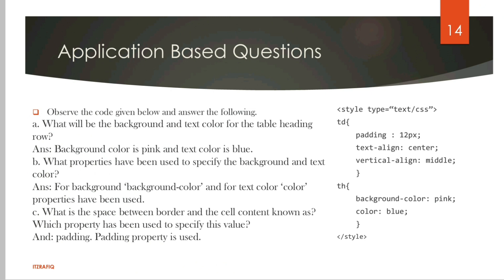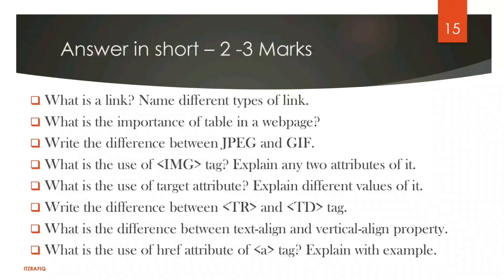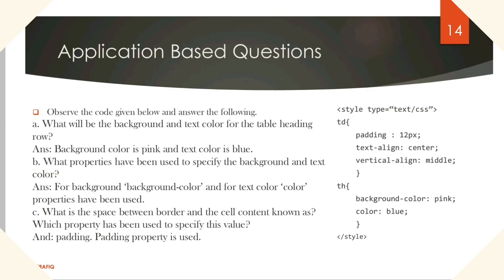Here are long answers for two to three marks. Sometimes it may be even four marks. What is a link? Name different types of links. This is already in the book - you can write it. Different types of links are internal, local, and global. Write with explanation. What is the importance of tables in a webpage? This is also in the book. A table divides the webpage into multiple sections. Write the difference between JPEG and GIF. JPEG is used for - SRC specifies an alternate text if the image is not loaded to the browser.